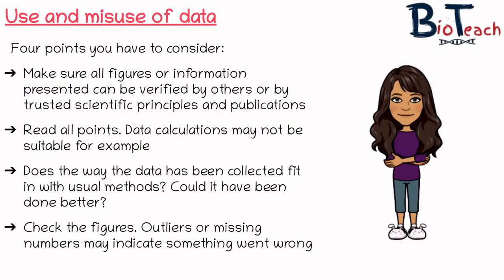If data has been presented to you in the article, there are a few points to consider. Look at the data to make sure that all figures or information presented can be verified by others or by trusted publications, as this is deemed more reliable. Make sure that when you look at tables or graphs you read all the data points, as some might be missed out or not suitable. You might even find that the way the data was collected could have been done better. Lastly, look for anomalous results or outliers in the data — it might indicate that something went wrong in the study.